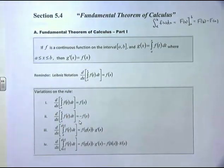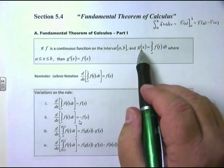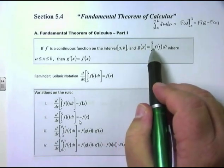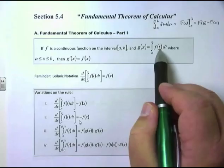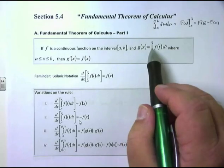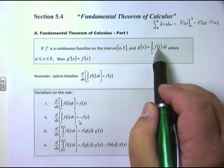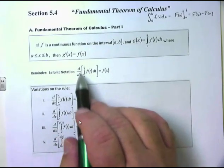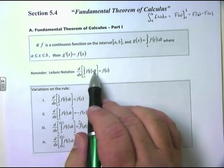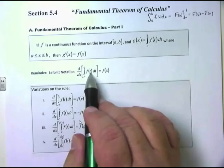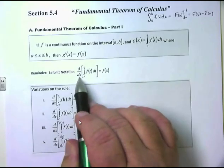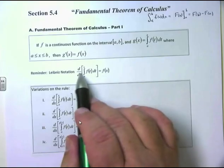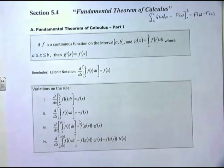Now that's a lot of notation — what does it really mean? When you take the derivative of an integral, and an integral is an antiderivative, the derivative of an antiderivative cancels, and you get back to where you started. In Leibniz notation: the derivative d/dx of the integral from A to x of f(t)dt — the derivative and the integral cancel — and you're just left with f(x), replacing t with x.